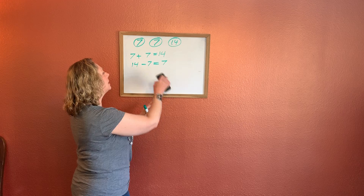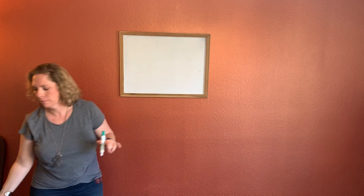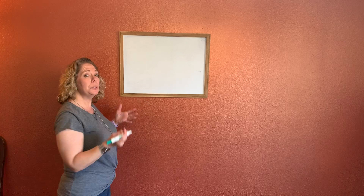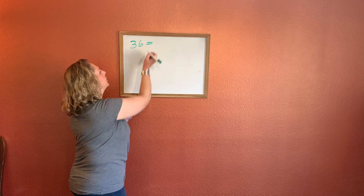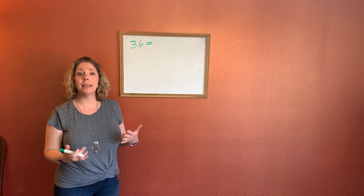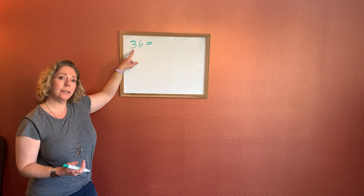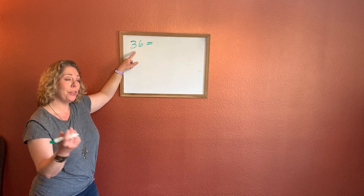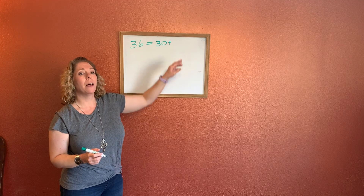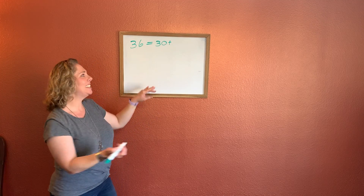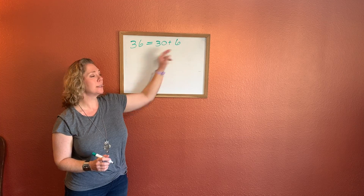Now let's do a quick review of expanded form. Let's start by looking at a two-digit number — how about 36. So how would we write 36 in expanded form? We start with the value of our tens place. We have three tens. What is the value of three tens? 30. So 36 equals 30 — the value of our tens plus the value of our ones. What's the value of our ones here? Six. In expanded form, 36 equals 30 plus 6.